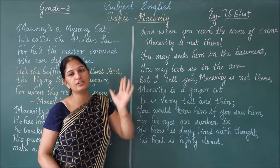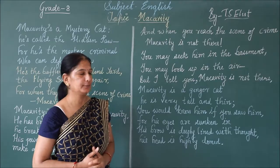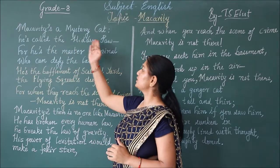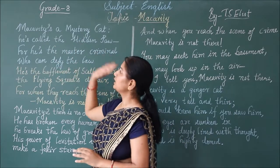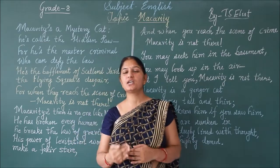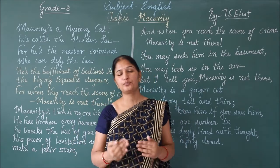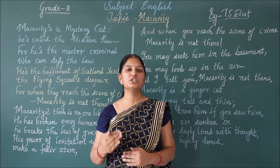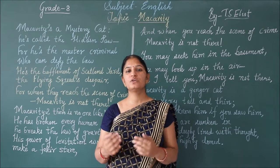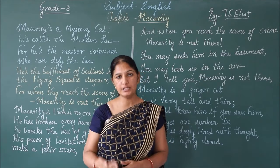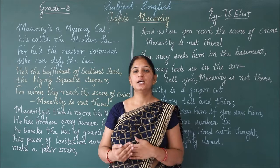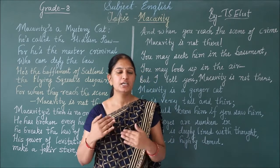McCavity is the name of the cat who is a mystery cat. Let us see the first paragraph. McCavity is a mystery cat. He is called the Hidden Paw. Here in this poem, McCavity is taken as a person, so the figure of speech is personification. Personification means when a non-living thing or an animal is considered as a human being, then it is called as personification.